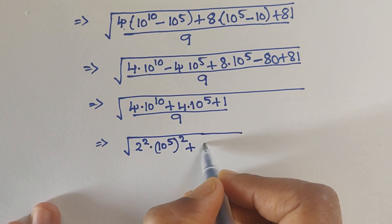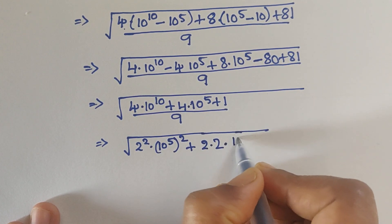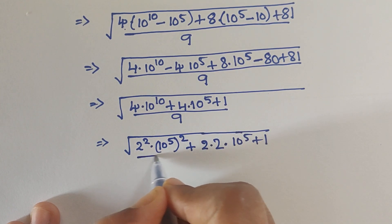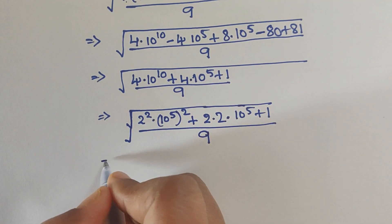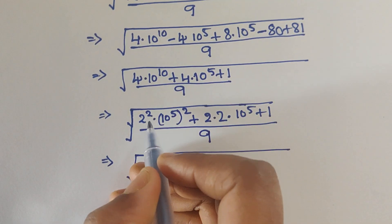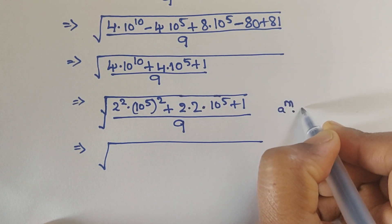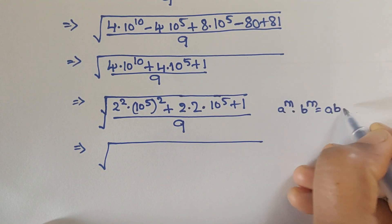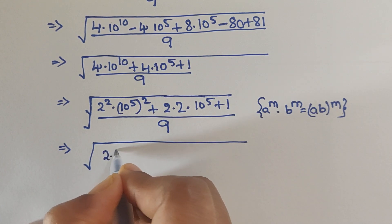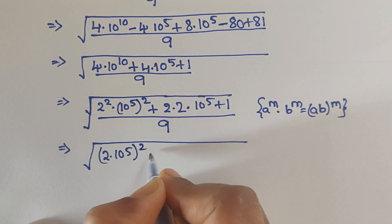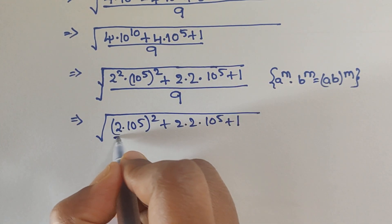So now, we can write this as 4 times 10 to the power of 10, plus 4 times 10 to the power of 5, plus 4. So here, 4 we can write as 2 times 2. So: 4 times 10 to the power of 5, plus 10 to the power of 5, plus 1, divided by 9.